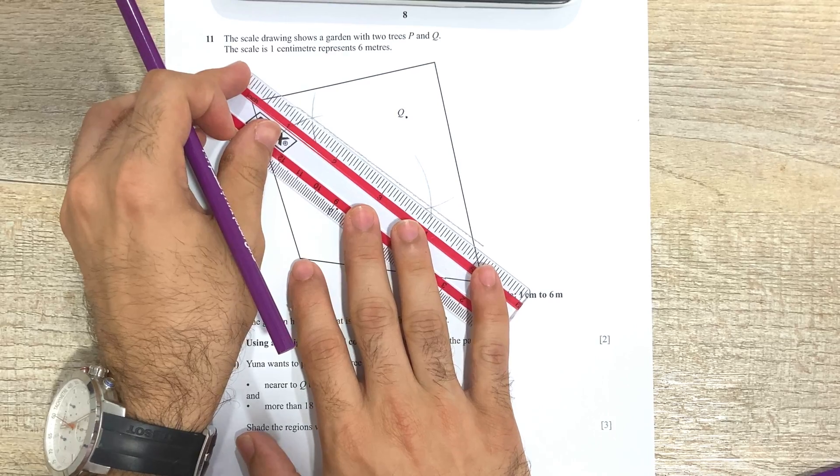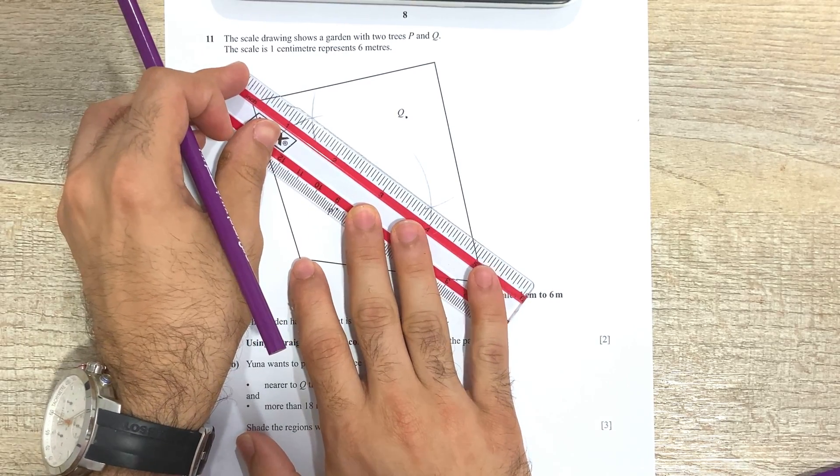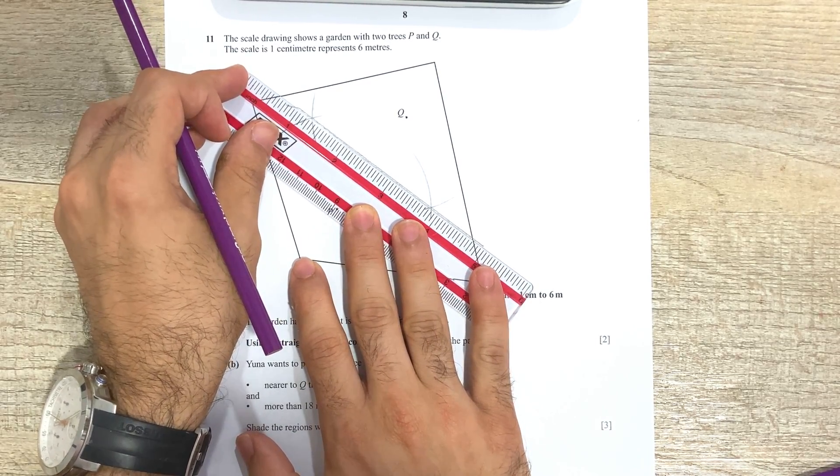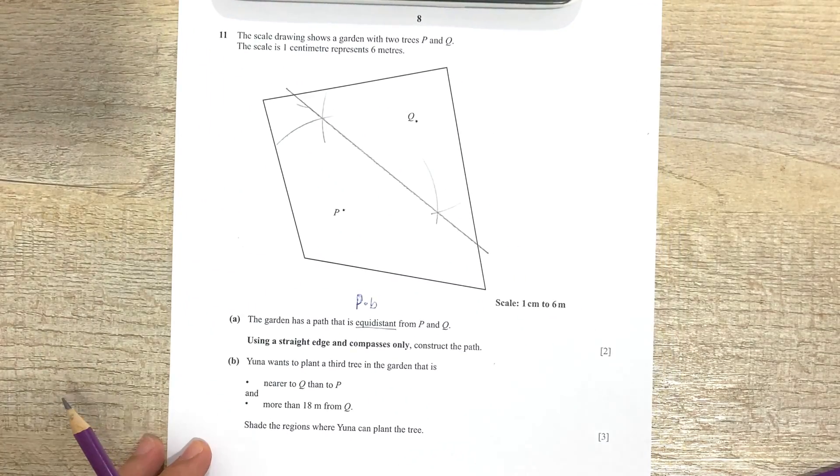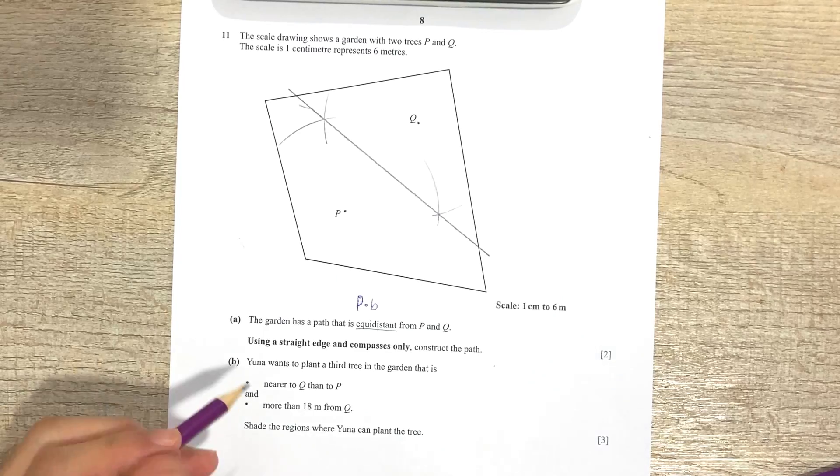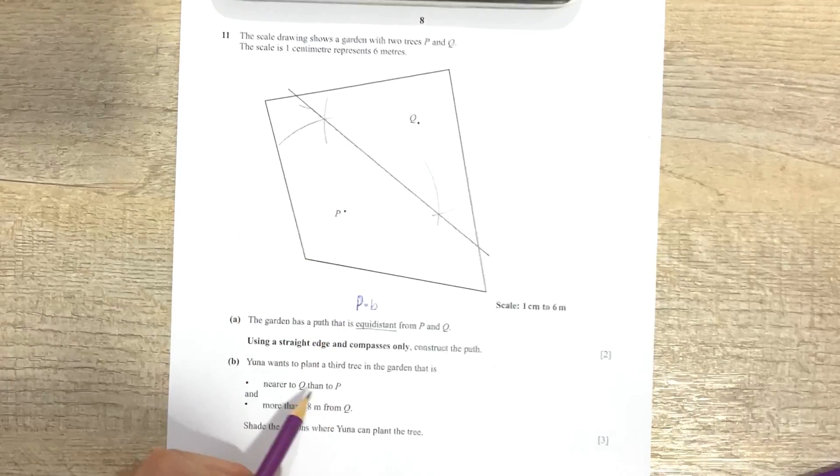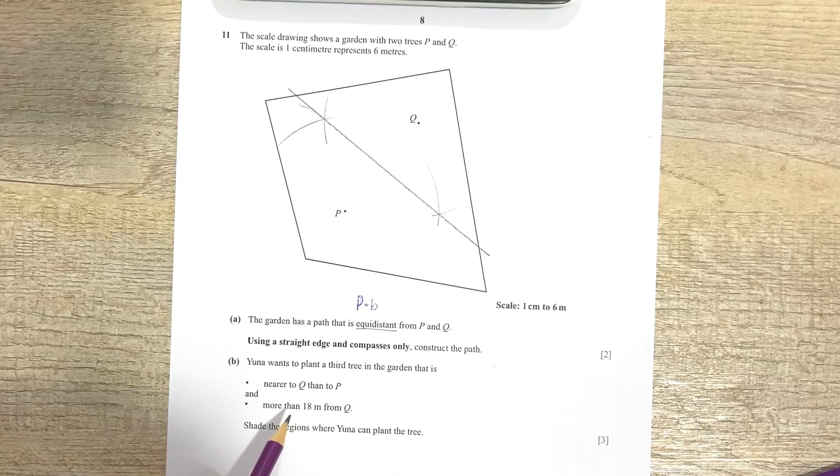And whenever you join them, make sure that you extend them enough. Oops, that was not supposed to happen, but yeah, make sure that you extend them enough so that they are at least inside the entire region that's mentioned in the question. Okay, so this is what's going to help us decide what region is nearer to Q than to P.